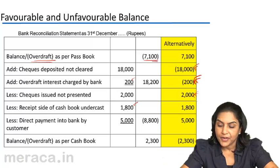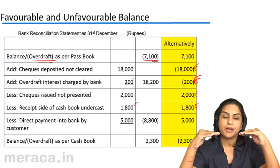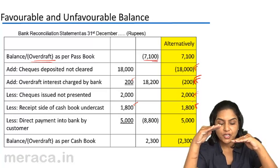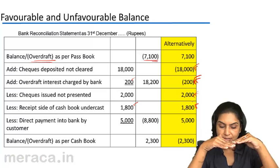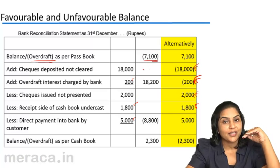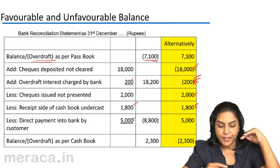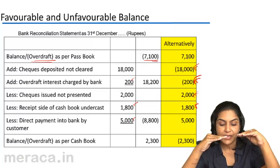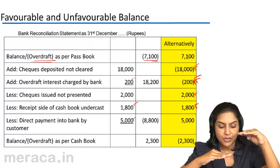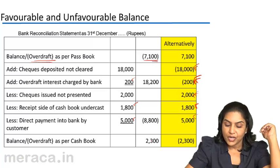We have added 1,800. Similarly, for direct payment into the bank by a customer — ordinary favorable balance: the passbook balance goes up, cash book is here, we've started from the passbook and therefore we deduct 5,000. Minus 5,000 from minus 7,100 is in effect an addition. Starting with an overdraft balance of 7,100: when there is a direct payment into the bank by the customer, the passbook overdraft comes down. From passbook to cash book we would add, and the net effect we get is 2,300.